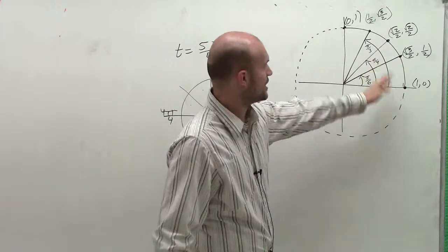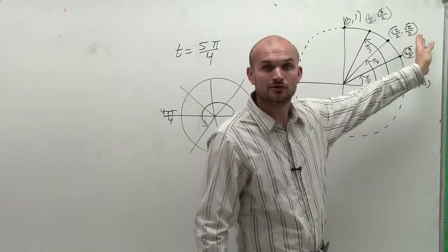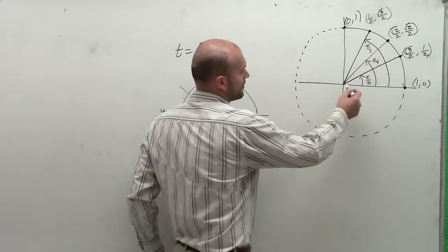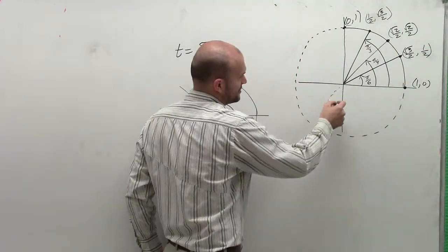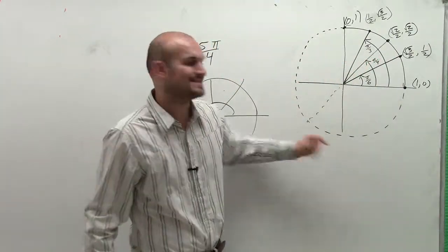If I look at my first quadrant, π/4 is positive √2/2, √2/2. So this angle, which is going to be an exact reflection, is going to be a reflection about the y-axis and the x-axis.